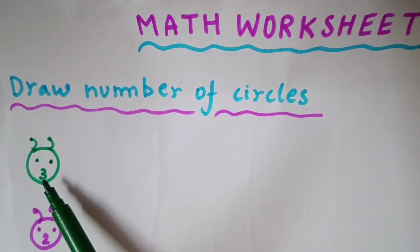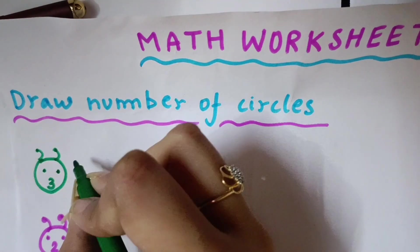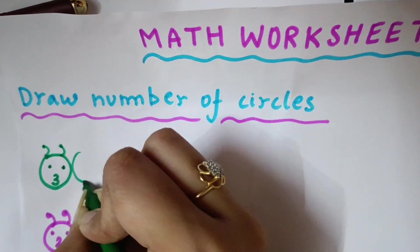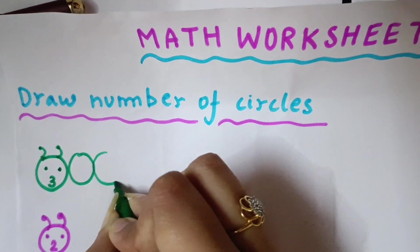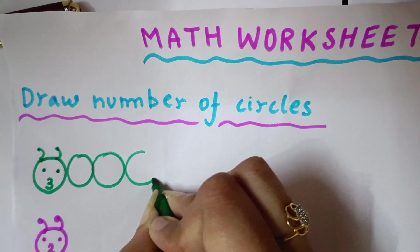You can see here the number is 3. So, you will draw here 3 circles. 1, 2, 3.